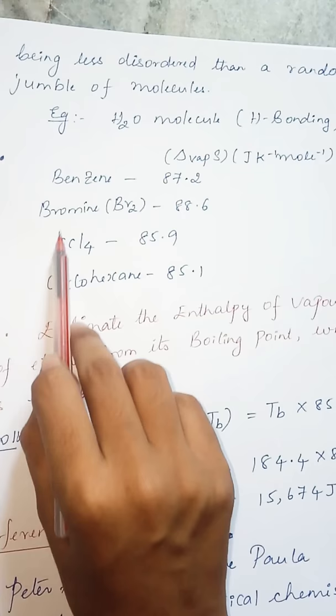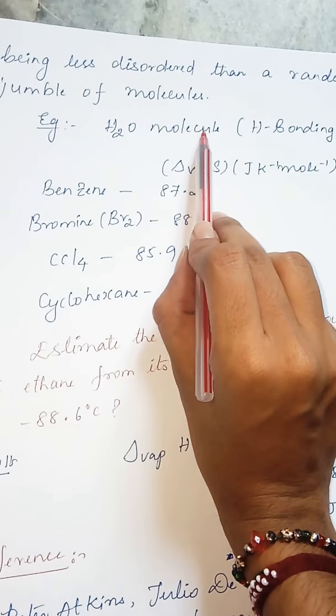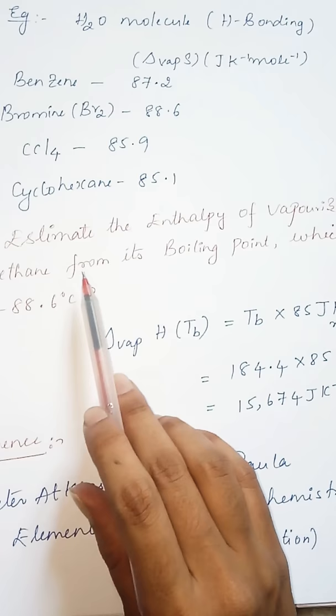But for the water molecule, because of the hydrogen bonding, the value is not 85, indeed it is approximately 95. What kind of questions you can expect in the exam is: estimate the enthalpy of vaporization of ethane from its boiling point, which is -88.6 degrees Celsius.